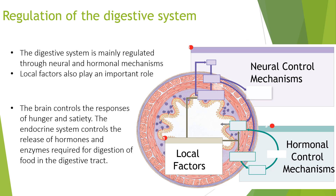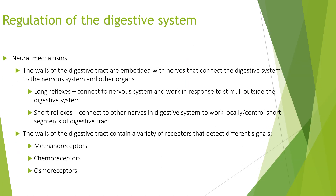The digestive system is mainly regulated through neural and hormonal mechanisms, with local factors also playing an important role. The brain controls the responses of hunger and satiety, while the endocrine system controls the release of hormones and enzymes required for digestion. The walls of the digestive tract are embedded with nerves that connect to the nervous system and other organs. Long reflexes connect to the nervous system and respond to stimuli outside the digestive system, while short reflexes work locally to control short segments of the digestive tract.